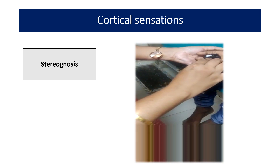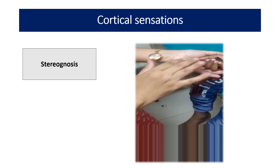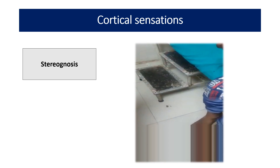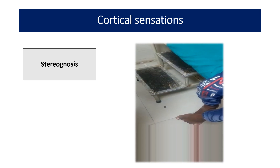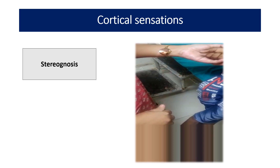For stereognosis, this is the ability to recognize or identify an object by feeling. In this video, you can see I have given chocolate to the child, and now I am giving a coin. We should give objects such as a safety pin or any circular or cube-shaped structure. The child should be able to identify the object — its shape, its texture — everything felt by the child. This is stereognosis.